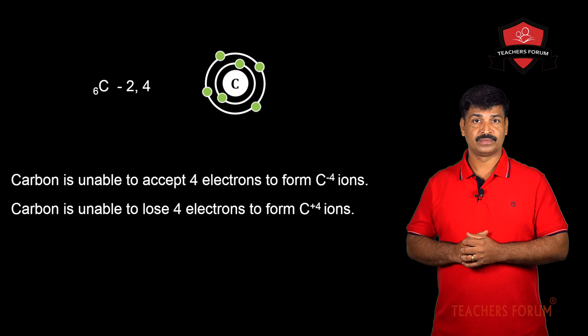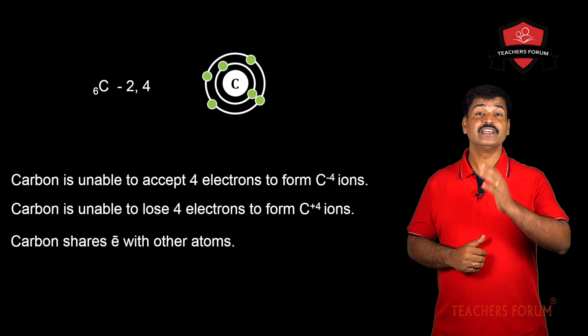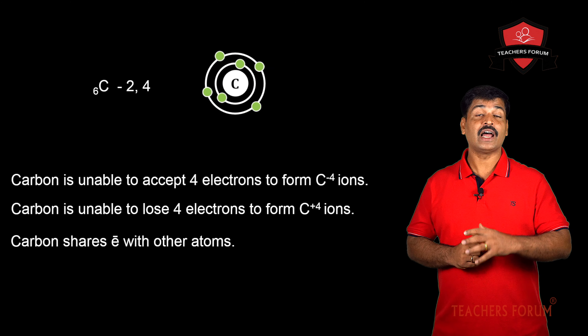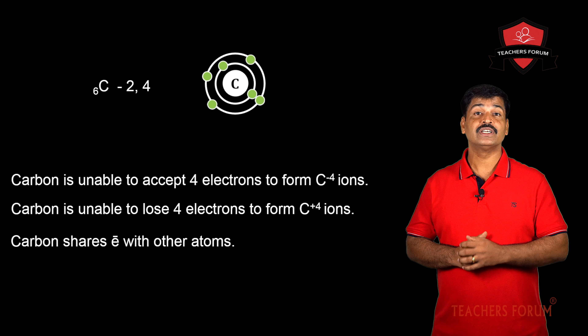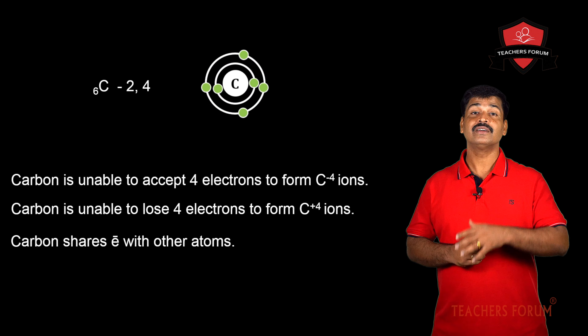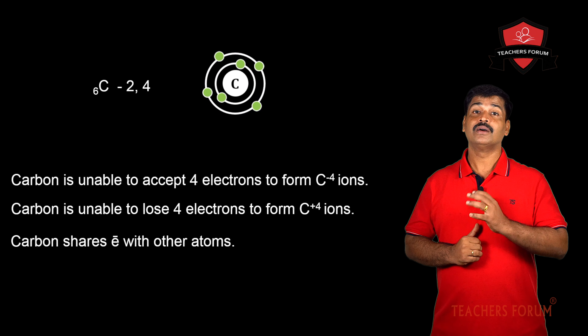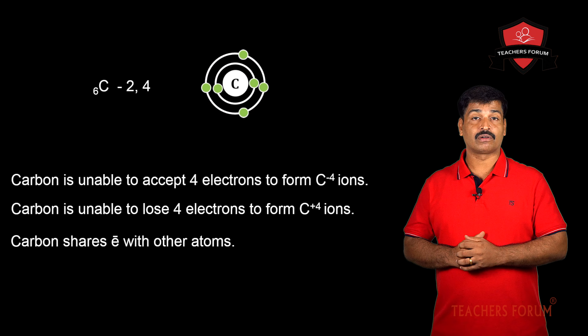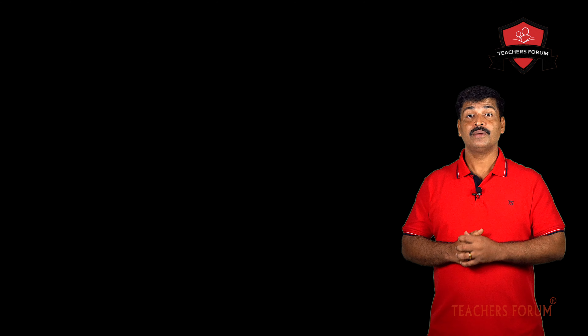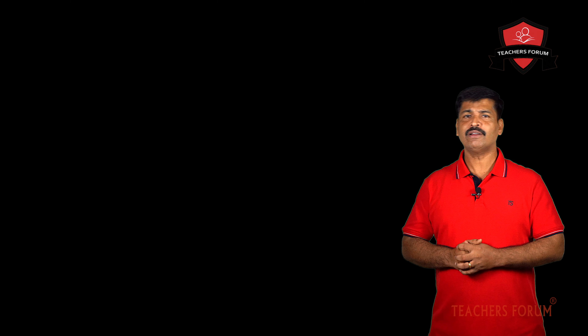So how does carbon combine with other elements? Carbon shares its electrons. In ionic compounds, electrons were transferred from a metal to a non-metal, but here carbon cannot give or accept electrons — instead, carbon shares electrons. Not only carbon, but many other elements also share electrons to form molecules.